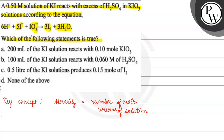If we talk about Option A, it gives us 200 ml of KI solution reacting with 0.1 mol of KIO3. We need to check whether this statement is correct. We have 200 ml of KI with molarity 0.50 molar (moles per liter). We multiply this by the volume: 200 ml, which we convert to liters — that is 200 × 10⁻³ liters.